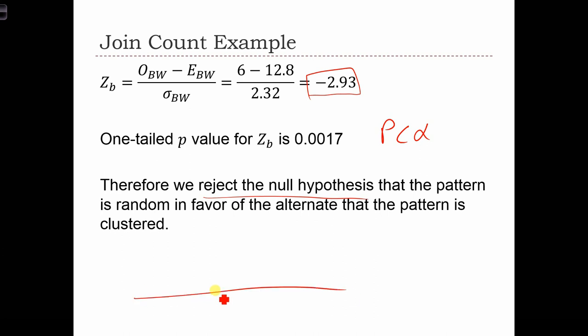So in this case, we had a z-score way out over here at minus 2.93. And the area that was more extreme than this z-score, so the area in here was just equal to 0.0017.